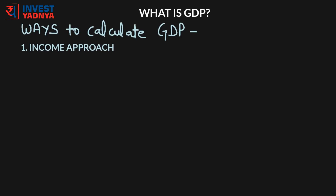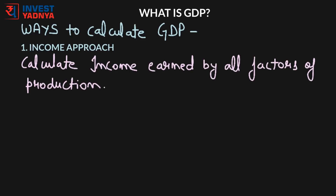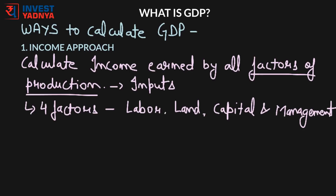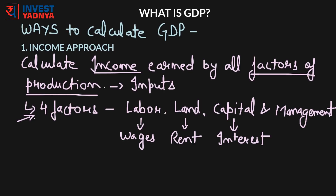The first is the income approach. The income approach starts with the income earned from the production of goods and services. Under this approach we calculate the income earned by all the factors of production in an economy. Factors of production are the inputs that go into producing a final product or service. There are majorly four factors: labor, capital, land, and management. In this approach we calculate income from each — wages earned by labor, rent earned by land, return on capital in the form of interest, and business profits earned by management.